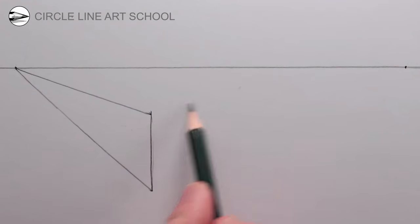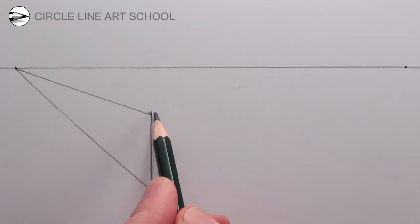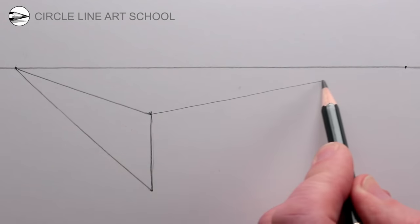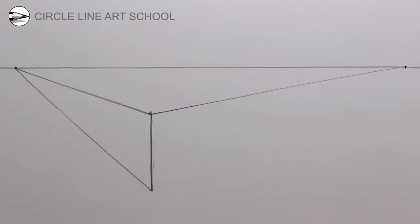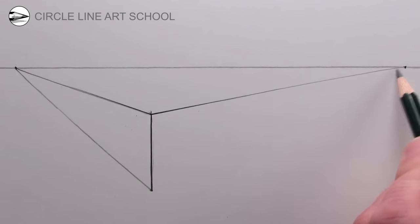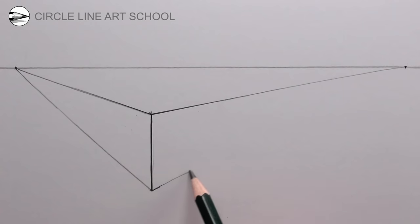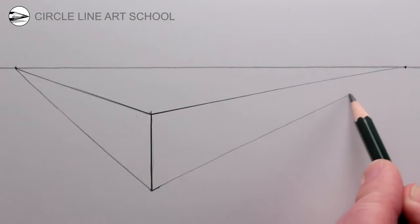Next, draw two more receding lines going to the right vanishing point — one at the top of the vertical line and one at the base. You could use a ruler for these lines or just do them freehand.